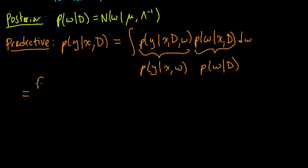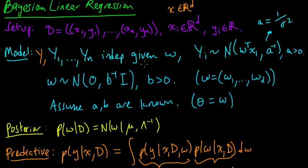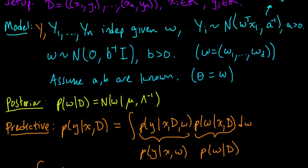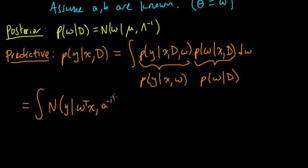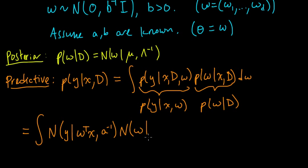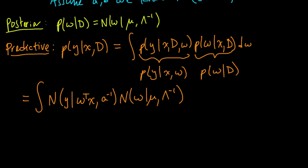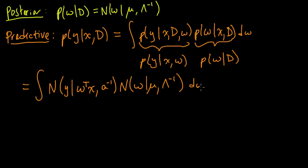So with that out of the way, now we can rewrite this. This one here, our model on Y is normal, so it's a normal density. We'll use this shorthand: normal density on Y with mean w^T x and variance—what was the variance? The precision is a, so the variance is a⁻¹. And this is just the posterior on w, so that's a normal. Remember we found the posterior: normal, mean μ, covariance Λ⁻¹. Λ is the precision matrix. Integrating with respect to w.